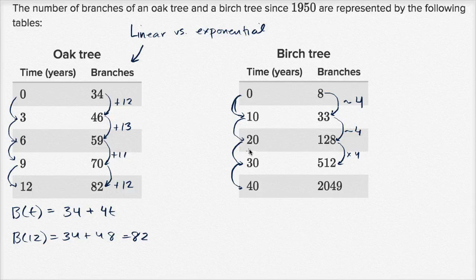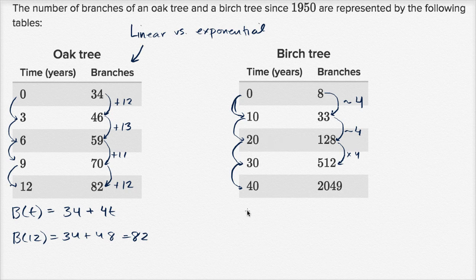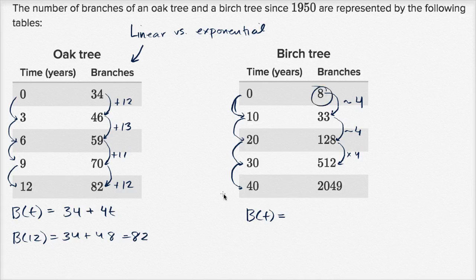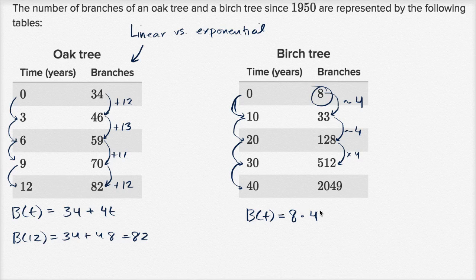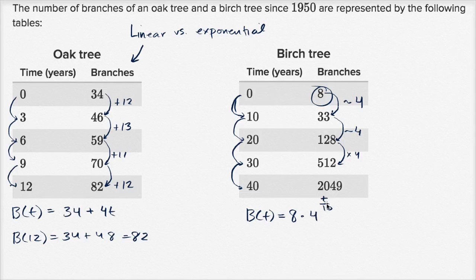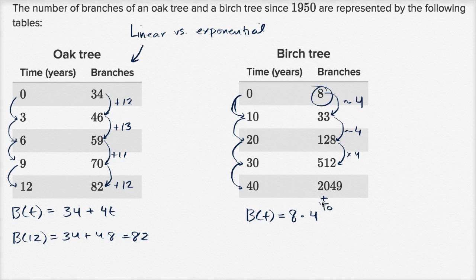So one way to think about it is we could say here, B(t), the branches of t, our initial condition is eight, and now we could say our common factor is four. But if we want t to be in years, every 10 years we multiply by a factor of four. So t has to go to 10 before we increase the exponent to one. So eight times four to the t over 10th power seems like a pretty good model.